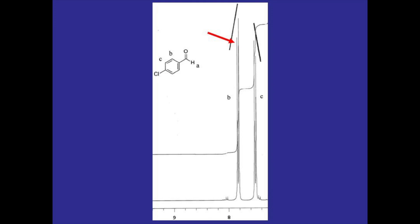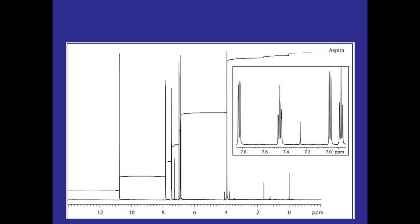We call this leaning: if we draw a line from the top of one peak of the doublet to the other, it is leaning towards the signal coming from the hydrogen that is splitting it. We could do the same thing for hydrogen C, showing that it is leaning towards the signal produced by hydrogen B.